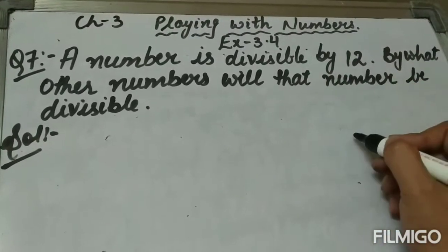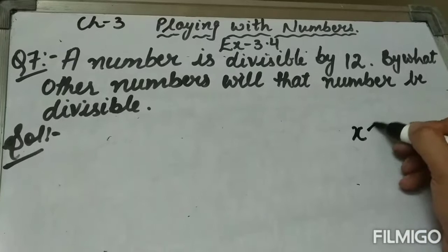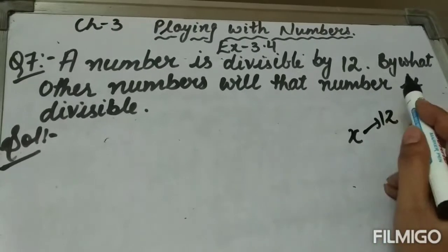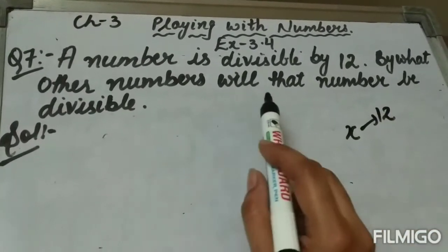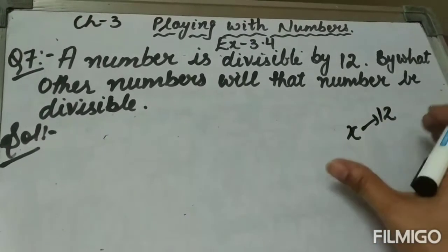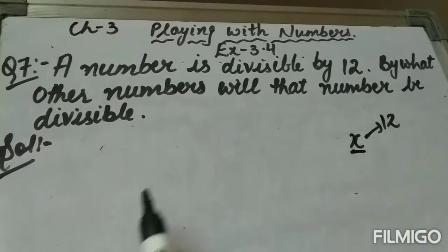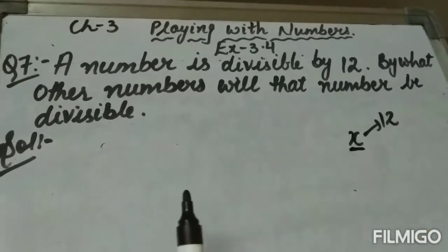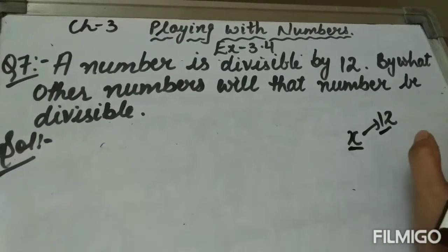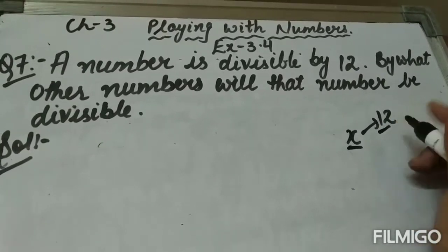Question number seven: a number is divisible by 12. We have to find by what other numbers that number will be divisible. If a number is divisible by 12, then it will also be divisible by all the factors of 12.